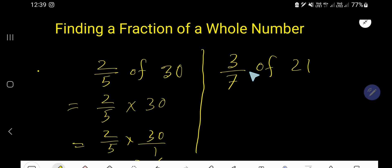Right? So how to find out the fraction 3 over 7 of 21. Just apply the same procedure. Instead of 'of', you just need to write multiplication sign, then 21.